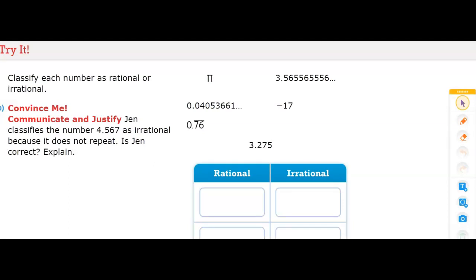Classify each number as rational or irrational. For sake of not rewriting everything, I am just going to circle. So we're going to start with the rational numbers first. So the rational numbers would be negative 17, 3.275, and 0.76.